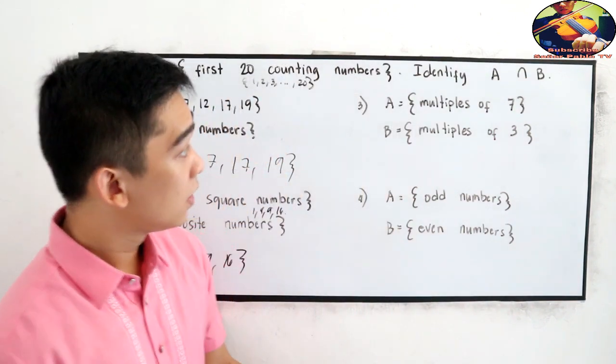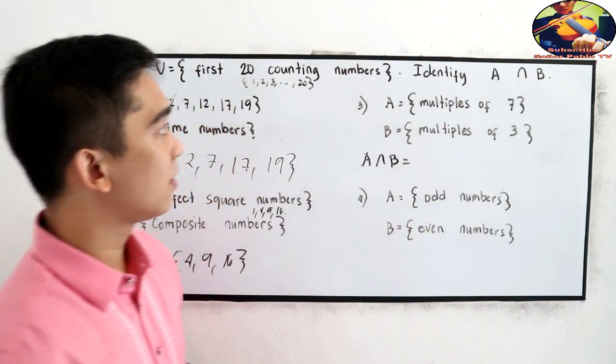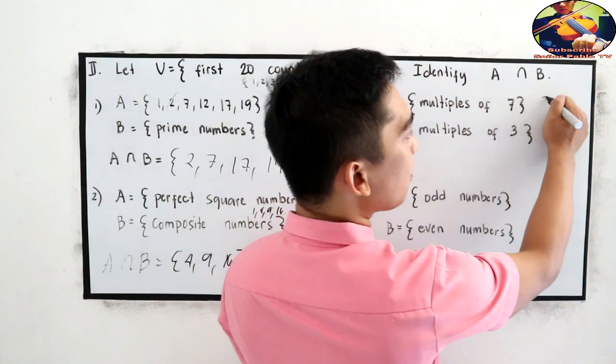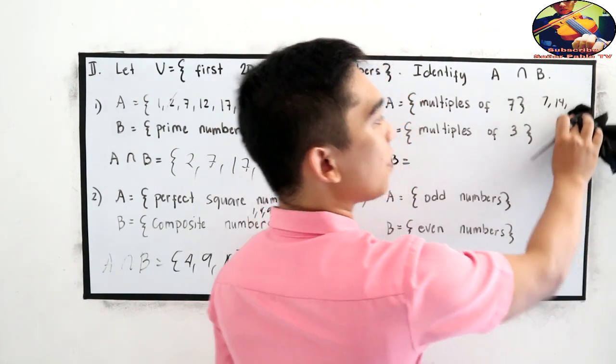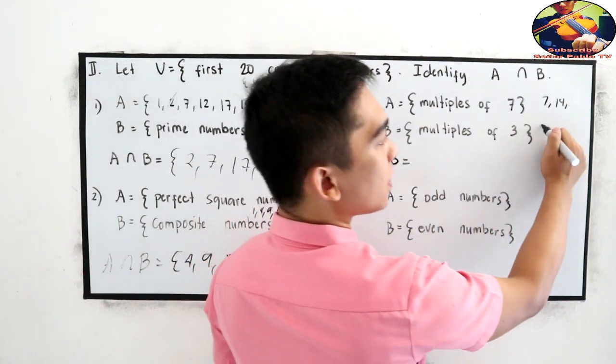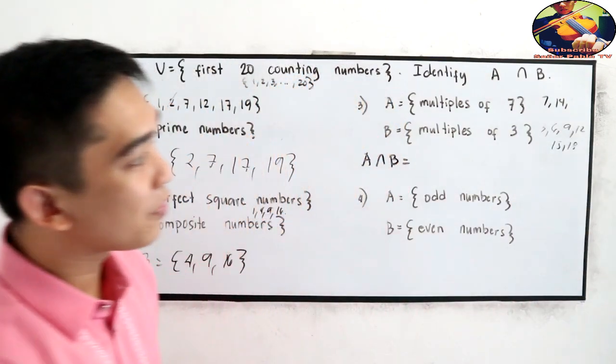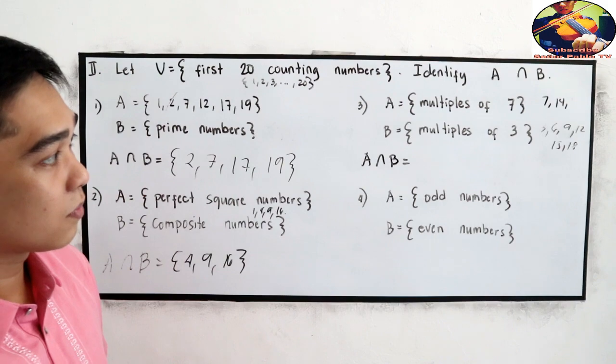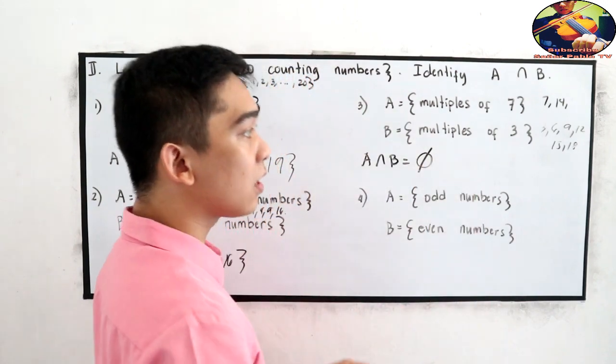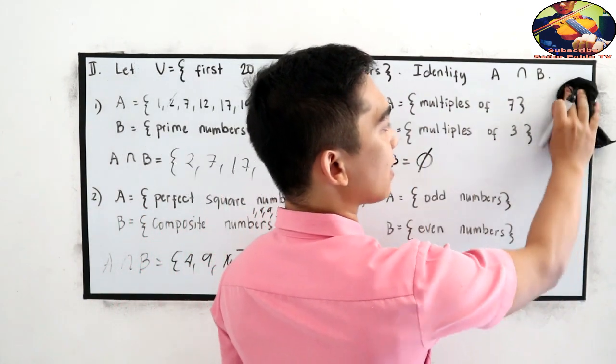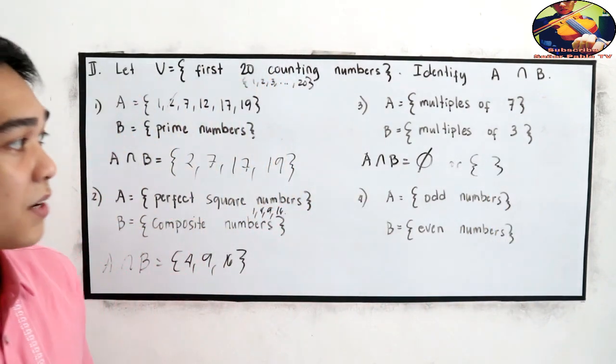Next, A intersection B, multiples of 7. So, from 1 to 20, that is 7, 14. 21 is not included. So, 7, 14. Multiples of 3: 3, 6, 9, 12, 15, 18. Do we have intersection of our sets? We don't have a common element. So, this is empty set or the null set, or you can simply write the word empty.